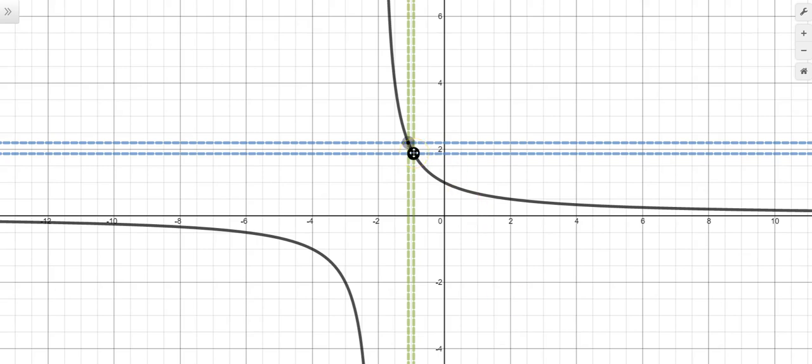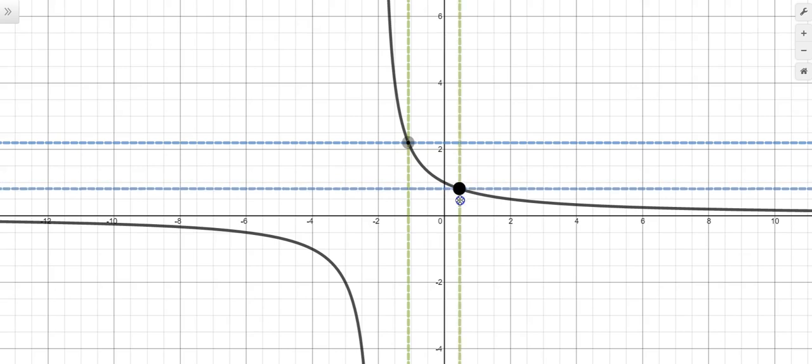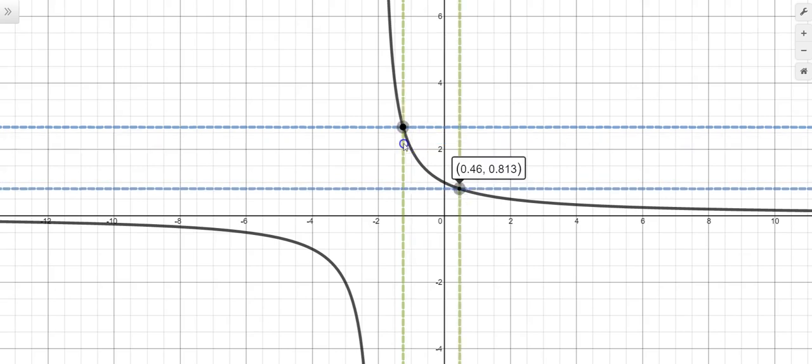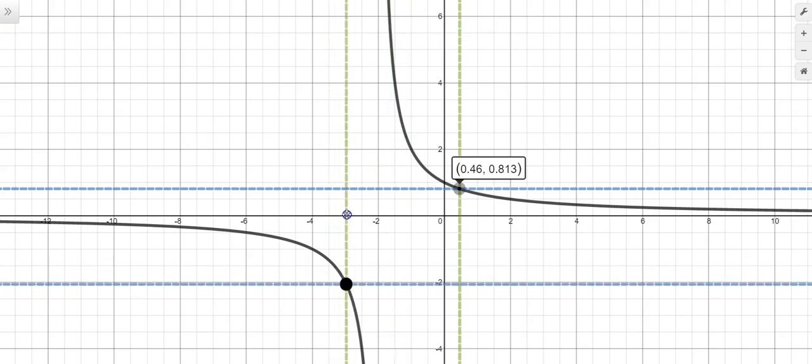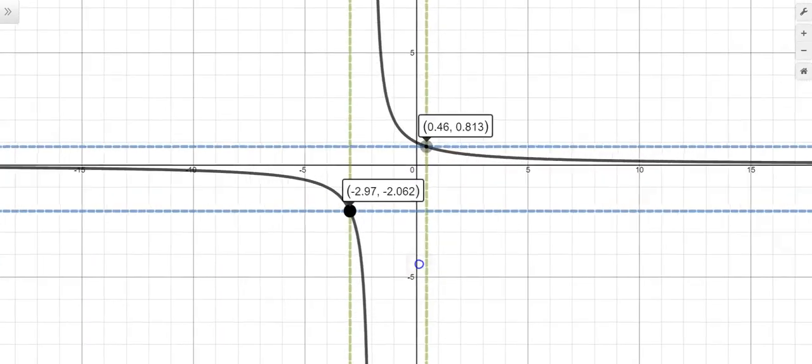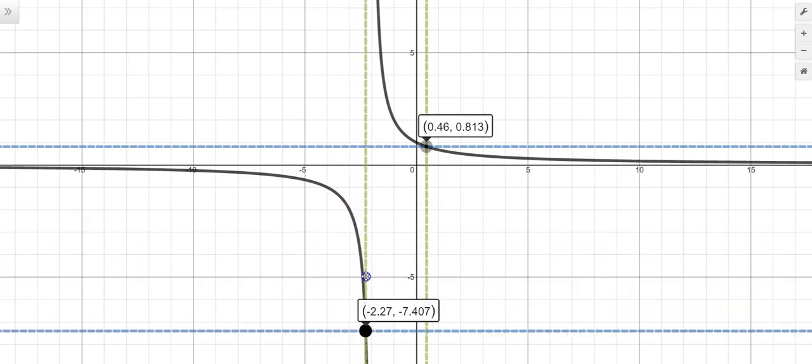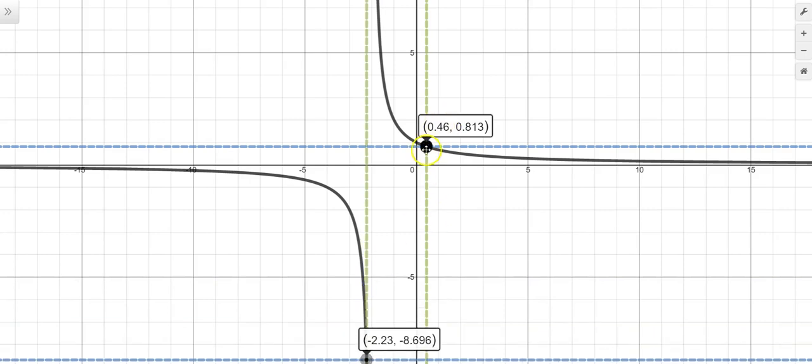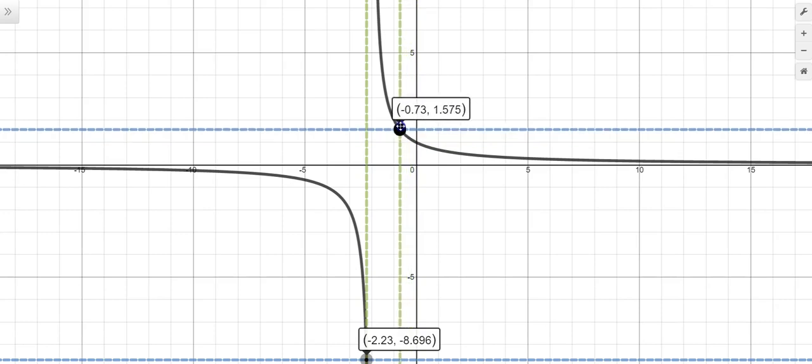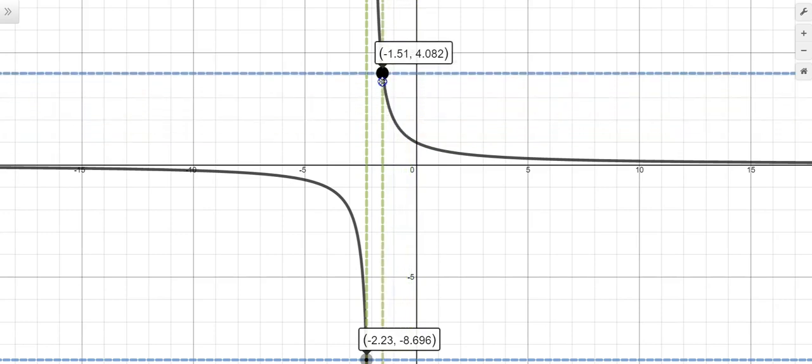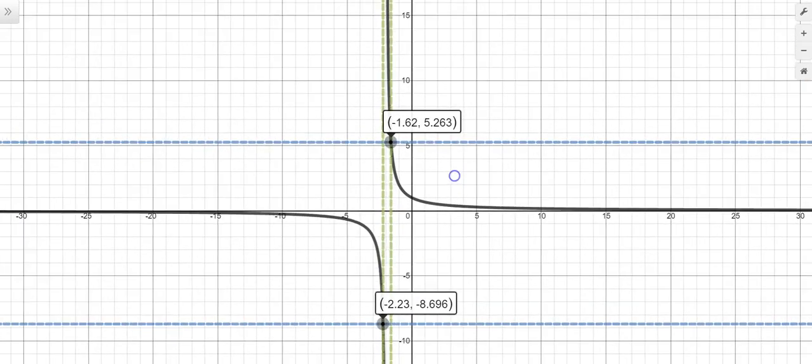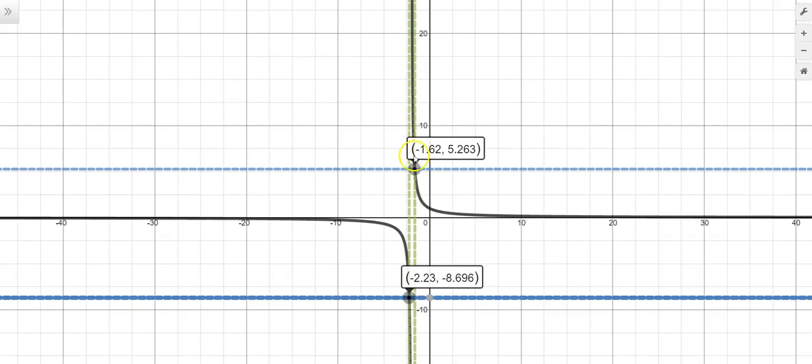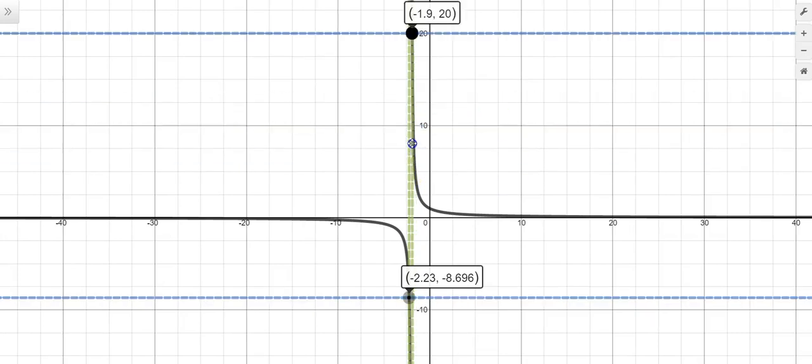So instead of making x get closer to negative 1, let's let x be closer to negative 2. So I'm going to turn these points on again, and I'm going to move this one over to here. So I want to make x get closer to negative 2. So I'm going to zoom out just a little bit here, and notice what x is doing. As x is getting closer to negative 2, what's happening to y?